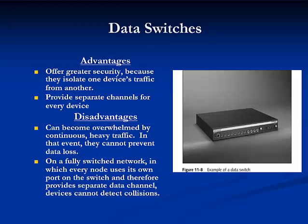Traditional data switches also belong to the data link layer of the OSI model. They can assign each port its own communication channel, thus creating many separate collision domains. Switches are often used to create virtual local area networks or VLANs. VLANs are logically distinct networks within networks, which includes a group of nodes and excludes other nodes. VLANs can be created across more than one switch or even multiple networks.